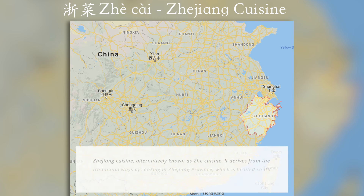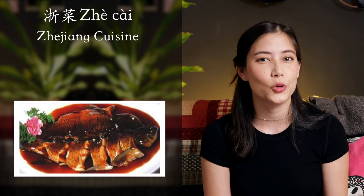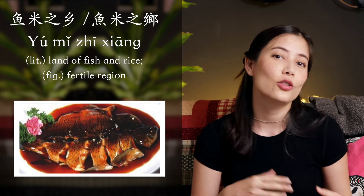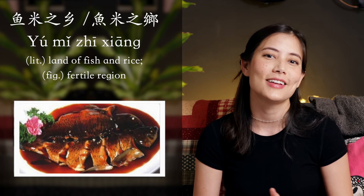Next on the list is 浙菜 (Zhè cài). This is a region where the dishes probably have the most poetry to them. There are lots of fish dishes — it's actually known as 鱼米之乡 (yú mǐ zhī xiāng), the hometown of fish and rice. And your favorite sweet and sour fish is, yes, from 浙菜.